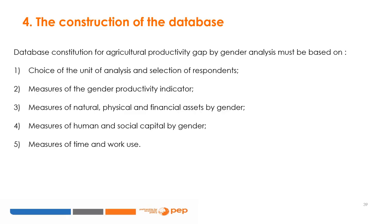The construction of the database for the agricultural productivity gap by gender analysis must be based on: the choice of the unit of analysis and selection of respondents; the measures of the gender productivity indicator; the measures of natural, physical, and financial assets by gender; the measures of human and social capital by gender; and the measures of time and work use.